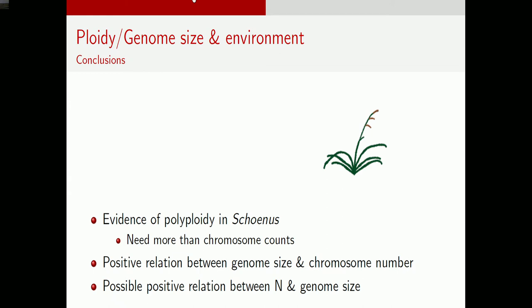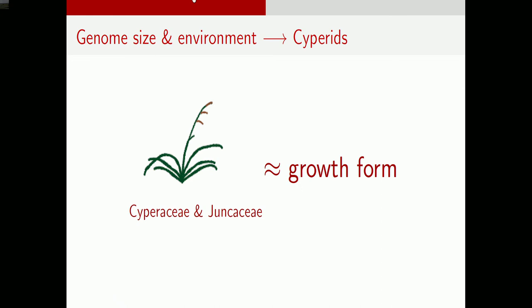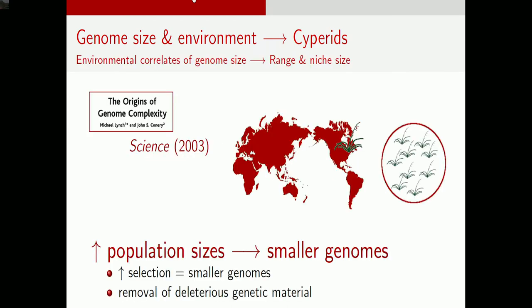Now I'll scale up to the Cyprids — the Cyperaceae and its sister family the Juncaceae — most of which are holocentric. This makes them a good study system because we don't need to correct for growth form since they're all graminoids of similar stature. There's another hypothesis I'll address: the relationship between population sizes and smaller genomes. The idea is that more natural selection — which occurs under larger population sizes — leads to species having smaller genomes, because selection pressure removes deleterious extra genetic material. As a proxy for population size, I'll use worldwide range size and also calculate niche size.